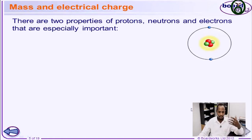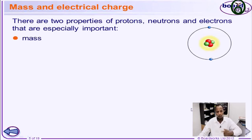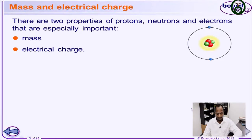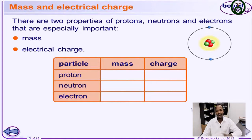It behooves us to understand the composition of these subatomic particles — the properties, the characteristics of these subatomic particles. The protons, the neutrons, and the electrons all have mass and charge. So we are going to look at these two properties of these subatomic particles of the atom. Let's take a look at the mass and charge of each of these subatomic particles.